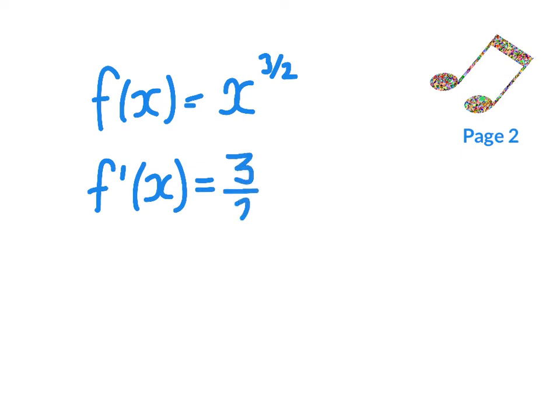so I've got 3 halves of x, 1 less than 3 halves, as 3 halves take away 2 halves, which gives me a half. So f dashed x is 3 halves of x to the power of 1 half.